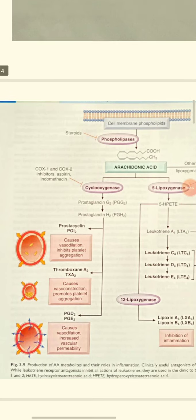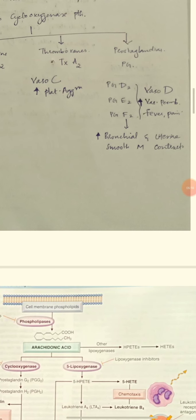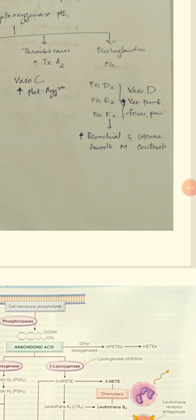Cyclooxygenase produces prostaglandins. The first step produces prostaglandins D, E, and F.